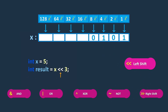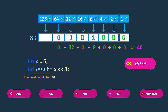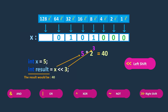The left shift operator shifts the bits of the left-hand operand to the left by a specified number of positions, as determined by the right-hand operand. In this example, shifting x to the left by three positions results in appending three 0's on the right. The original bits of x are shifted three positions to the left, and the vacant positions on the right are filled with 0's. Therefore, the decimal value of the result is 40. The left shift operator effectively multiplies the left-hand operand by 2 raised to the power of the right-hand operand.